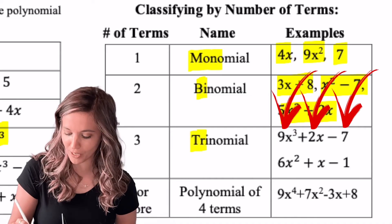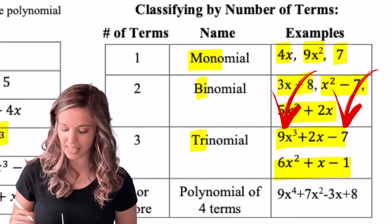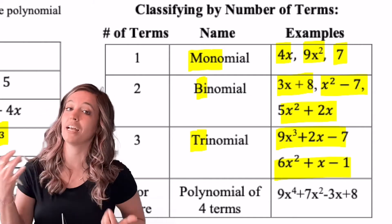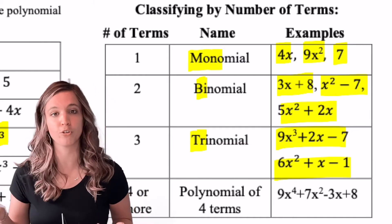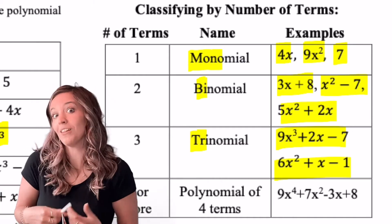And then we've got trinomial for three terms. Anything beyond that, we just say polynomial and state how many terms: polynomial of four terms, polynomial of five terms. Poly means many.